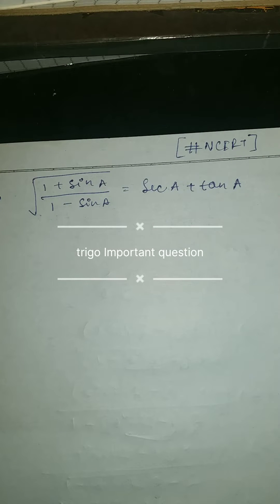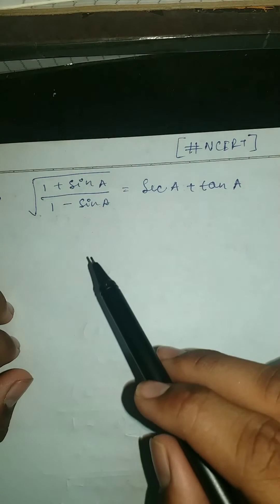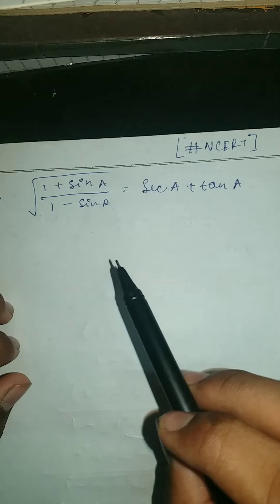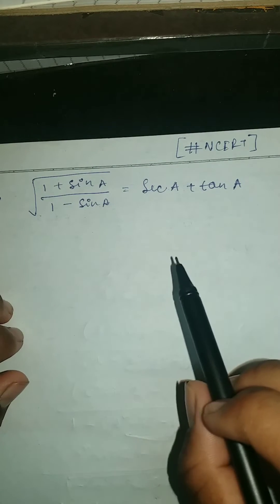So guys, here let's see how to do this. This is a good question of NCERT trigonometry. The question is: square root of (1 + sin A) / (1 - sin A) is equal to sec A + tan A.